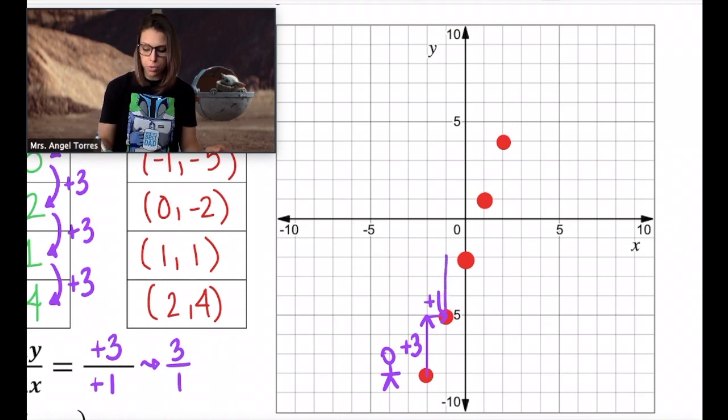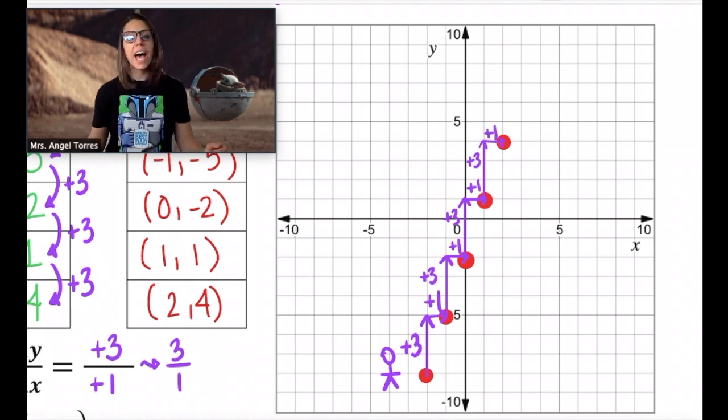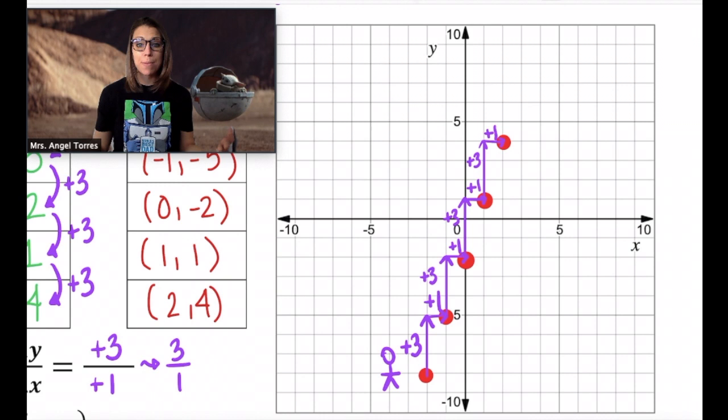Does that continue? Well, let's see, up 1, 2, 3, and right 1. Up 1, 2, 3, right 1. So this pattern, this change is happening constantly. Now here's the really cool part. We should have already known that this change is going to happen because of our rate of change right here.